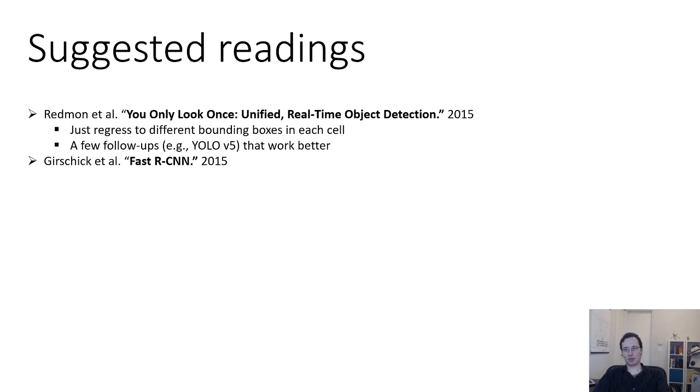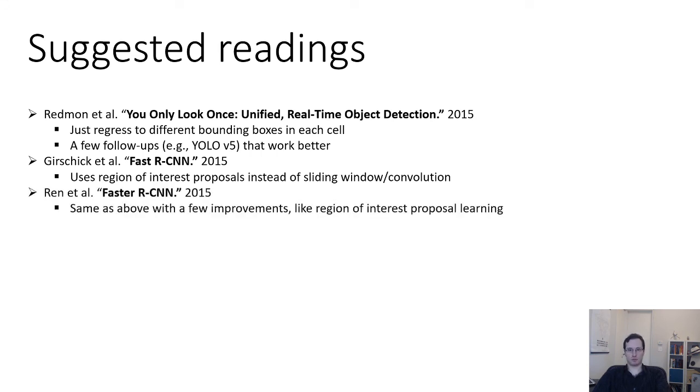RCNN, there are three papers that are kind of the core RCNN approach. The original RCNN paper, Fast RCNN, and Faster RCNN, and they all use region of interest proposals. And the difference in the more modern ones is that they reuse activations, just like Overfeat, and they have a few improvements in how they learn the region of interest proposals themselves.